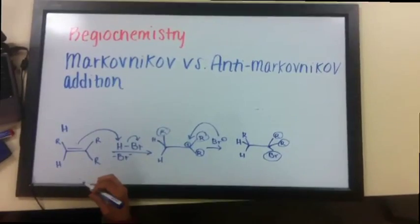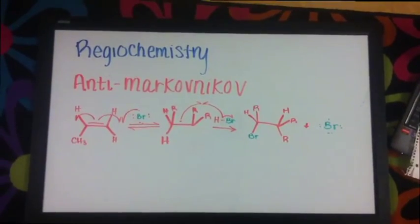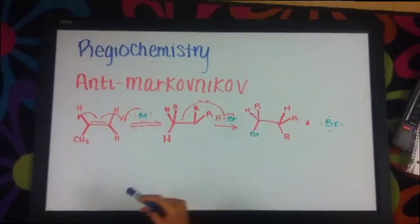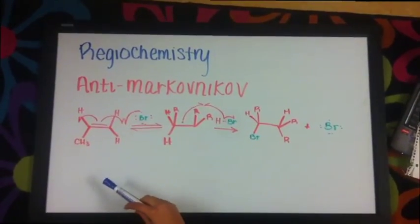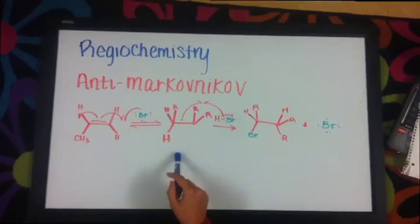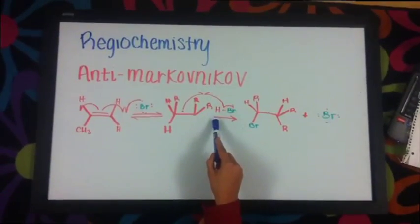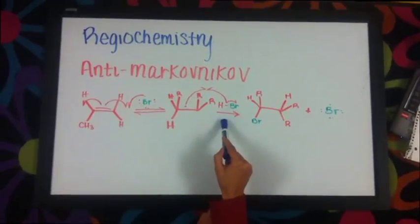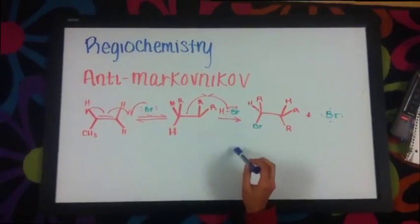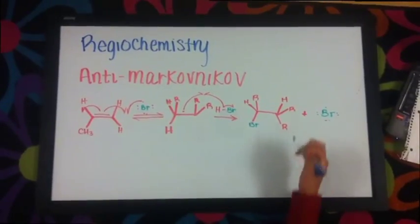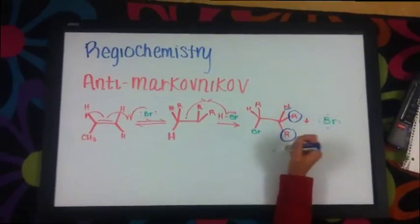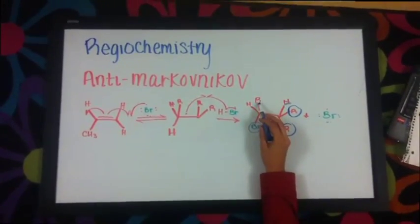In an anti-Markovnikov addition mechanism for a radical reaction of an alkene with HBr, we see an electrophile bromine radical add to the alkene to generate a secondary radical. The radical abstracts a hydrogen atom from another molecule of HBr, creating the alkyl bromide and another bromine radical. The final product is anti-Markovnikov because there are two substituents bonded on one side with a hydrogen, while the bromine was added to the side with the least amount of substituents.